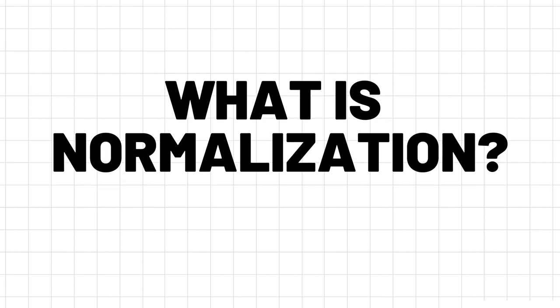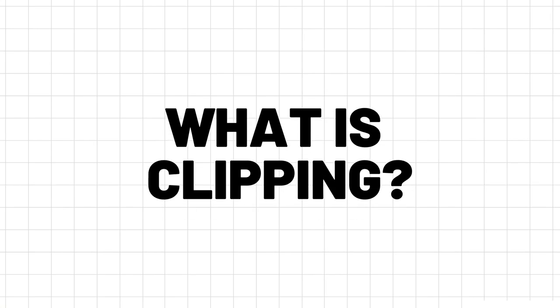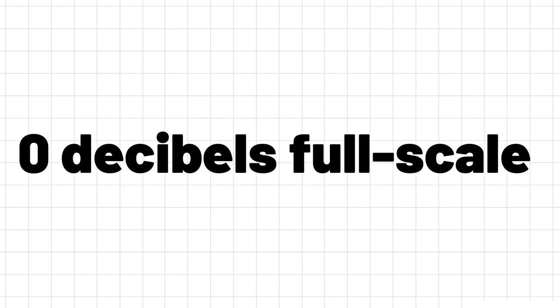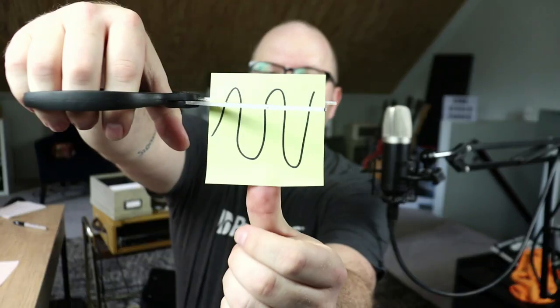What is normalization? Normalization is actually very simple, but first we need to define clipping. Clipping occurs when the signal crosses the maximum allowable level of the system. In a digital system, that max level is 0 dBFS, or 0 decibels full scale. In a digital system, 0 is the max, and all other volumes are negative numbers. When the signal crosses 0 dBFS, it literally gets clipped.